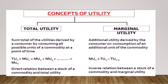The formula for total utility is: MU1 + MU2 + MU3, and so on — when you add all the marginal utilities together, that is your total utility. There is a direct relationship between the stock of a commodity and total utility. Marginal utility is the additional utility derived by the consumer on consumption of an additional unit of a commodity. The formula is: MU(n) = TU(n) − TU(n−1). There is an inverse relationship between the stock of a commodity and marginal utility.